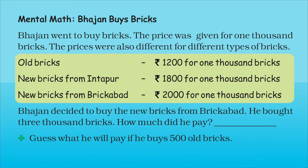Now children, let us see if you can solve these problems. Bhajan went to buy bricks. The price was given for one thousand bricks, and the prices were different for different types of bricks. Old bricks cost rupees 1,200 for one thousand bricks. New bricks from Intapur cost rupees 1,800 for one thousand bricks. New bricks from Brikabad cost rupees 2,000 for one thousand bricks. Bhajan decided to buy the new bricks from Brikabad — he bought three thousand bricks. How much did he pay?